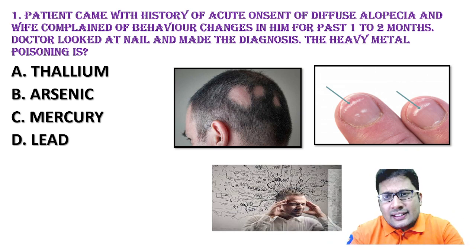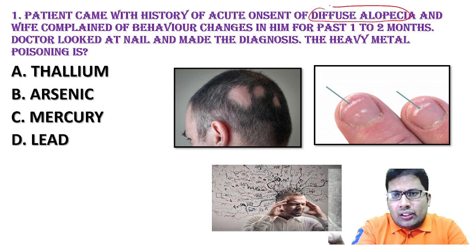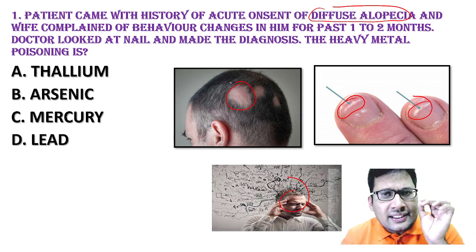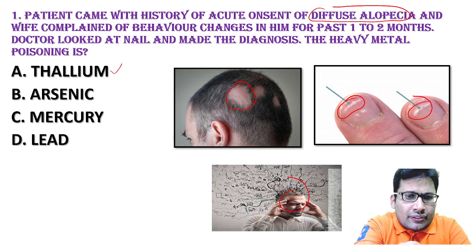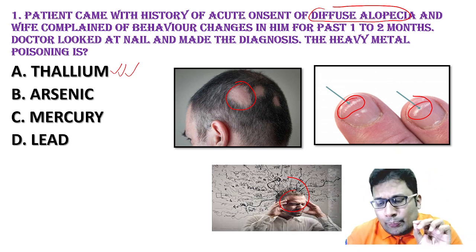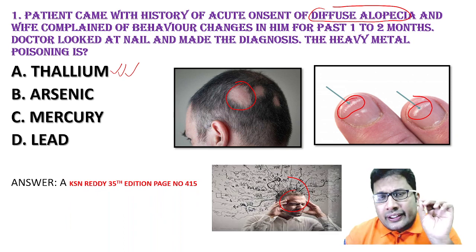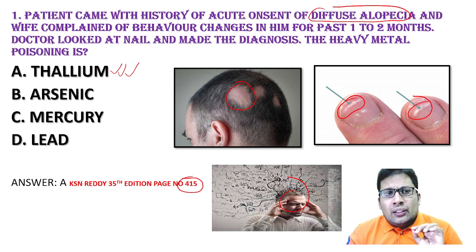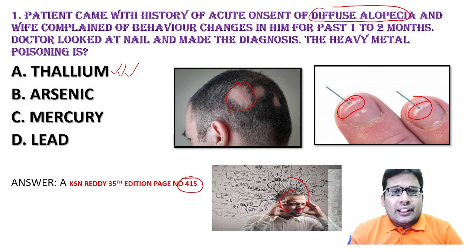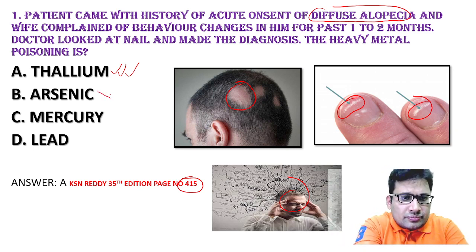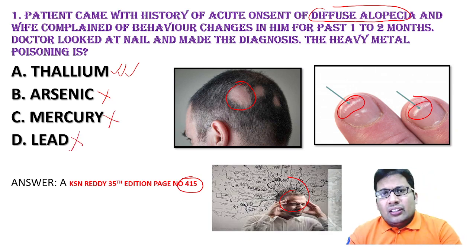In this question, there is diffuse alopecia, the presence of Uldrich Mees' line, and behavioural changes — this is the classical triad of thallium poisoning. Mees' line can also be seen in arsenic, but look at the question. This question is framed from the standard textbook KSN Reddy, 35th edition, page number 415. Diffuse alopecia, Mees' line, and personality or behavioural changes all go in favour of thallium. It is not arsenic, not mercury, not lead.